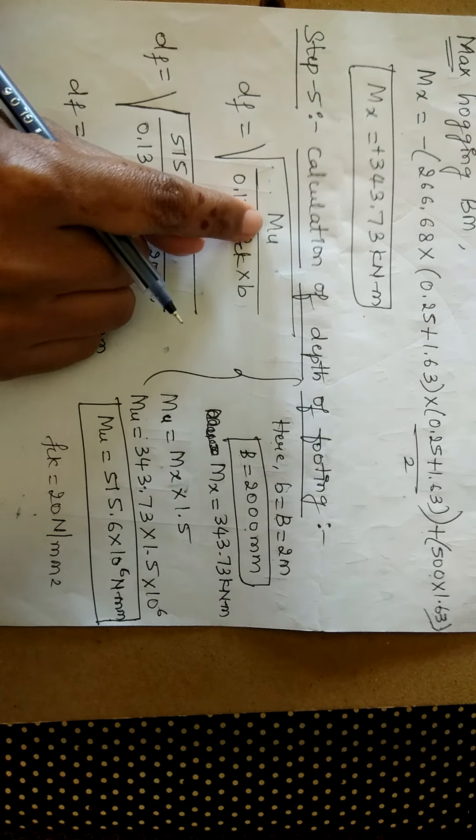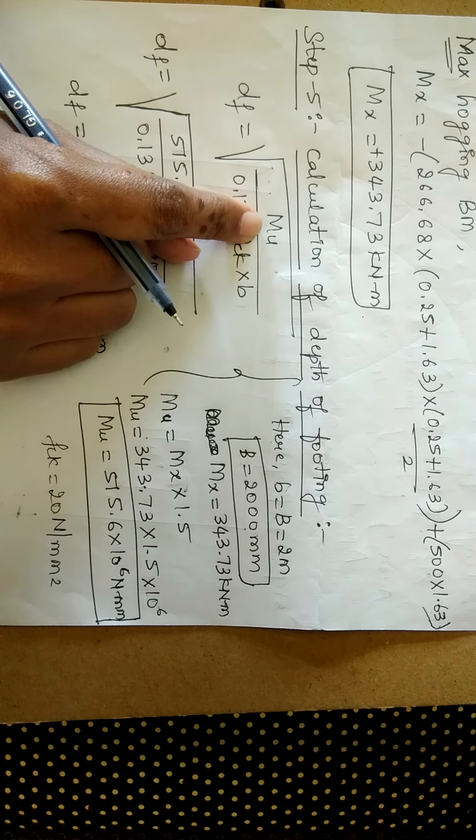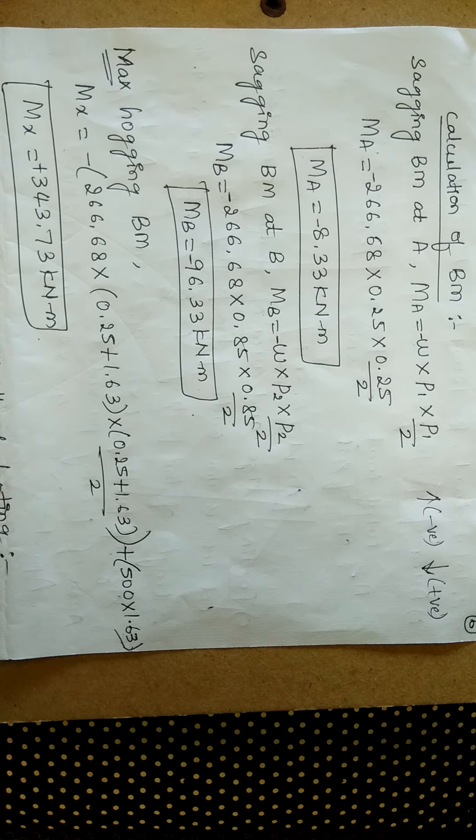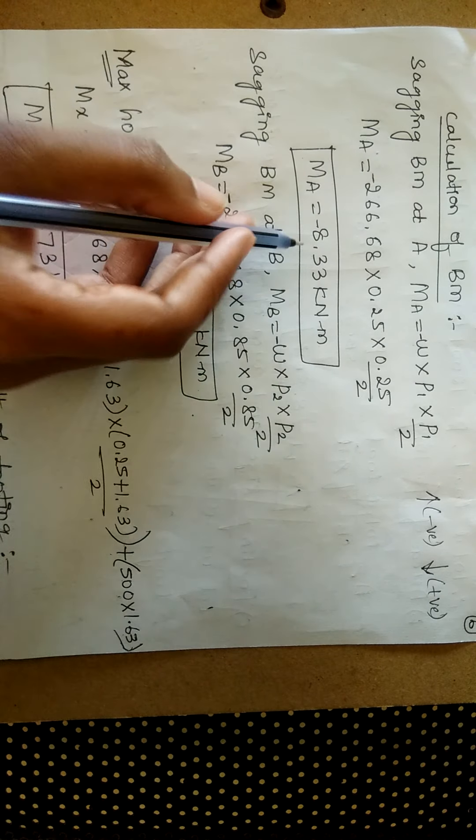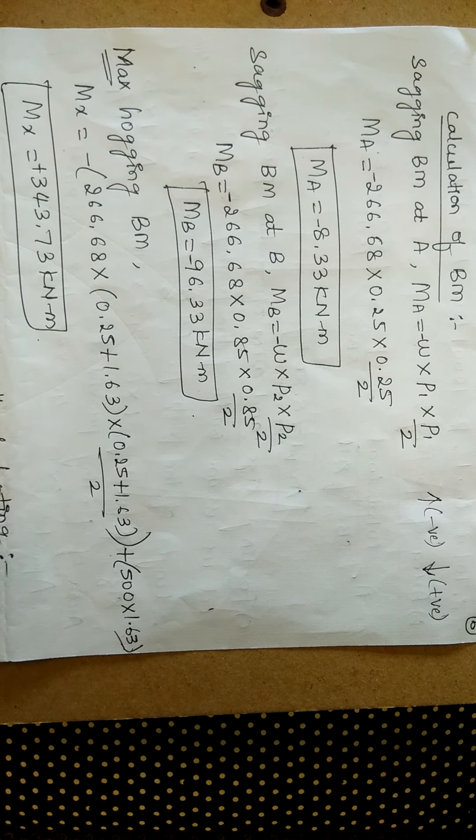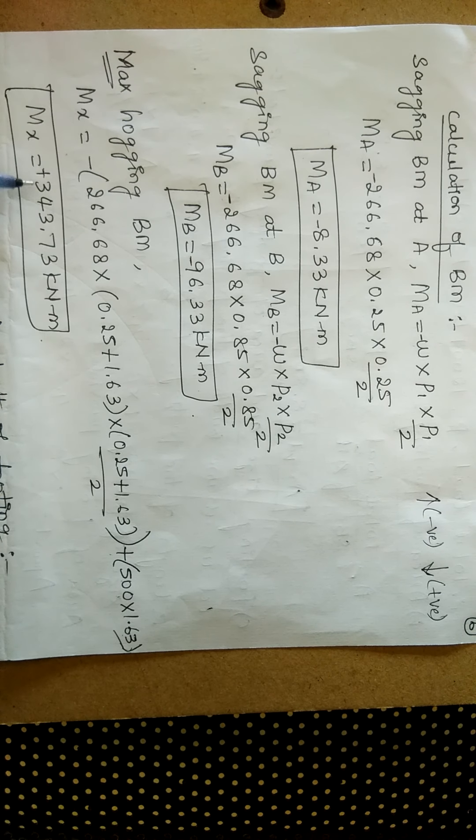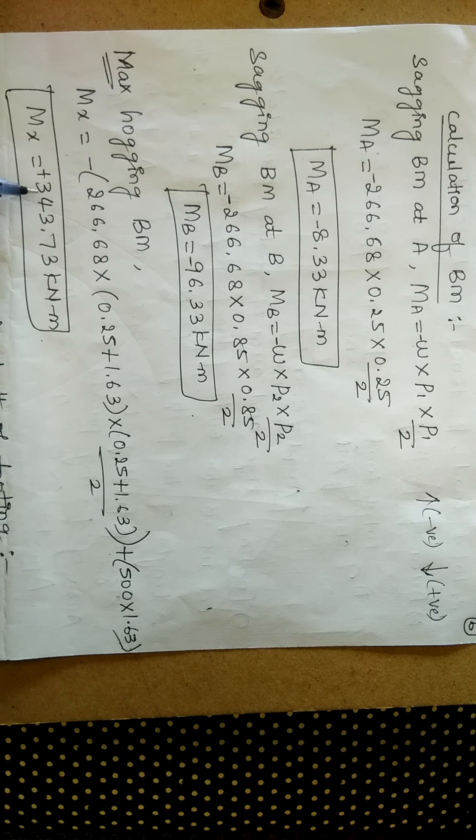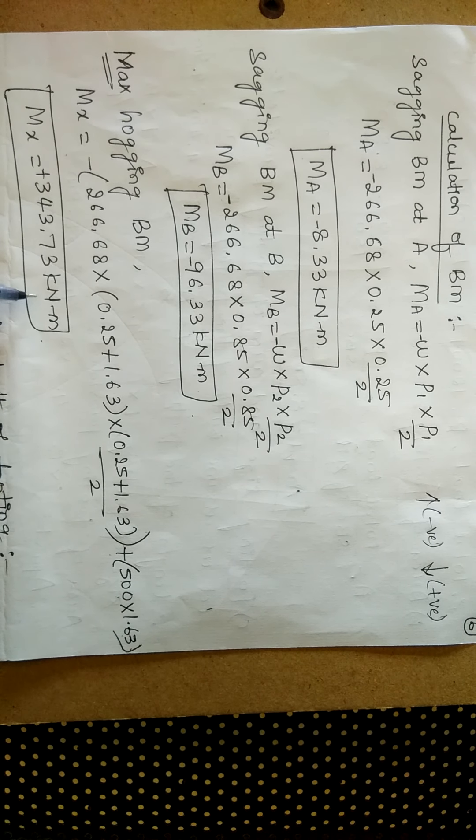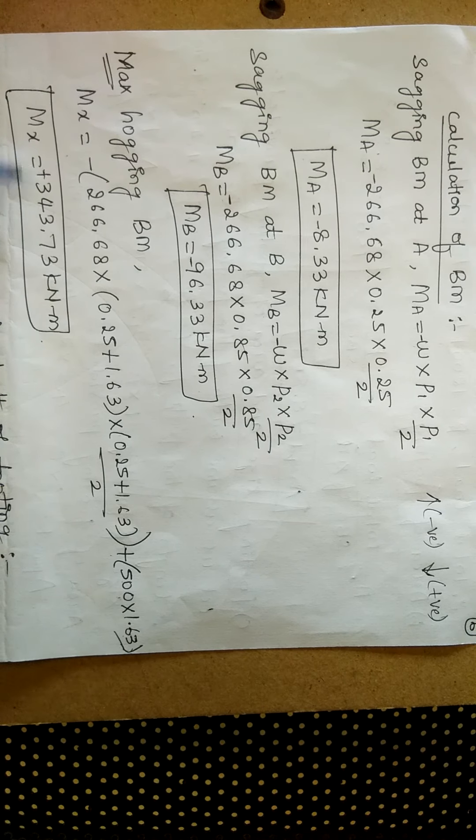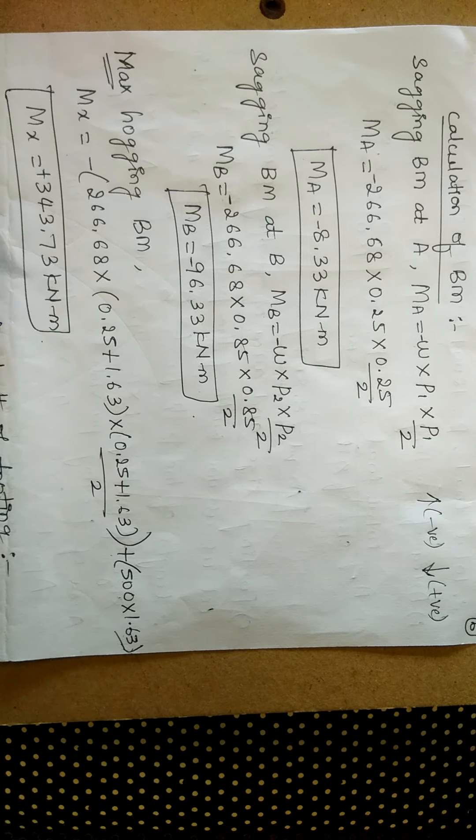Now, which value of mu you need to take? See, we have got 3 different values of moment. Two are negative and one is positive. So out of these three, we always have to consider the higher value along with the positive sign. Here, there is only one positive value and that itself will become the higher value of the bending moment because we have got the maximum bending moment at the x-axis. And that value is 343.73 kilonewton meter.